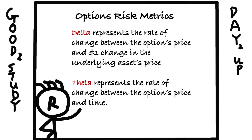Next we need to talk about the Greeks — finance people use Greek letters to represent different components of an option's price. Delta represents the rate of change between the option's price and every dollar change in the underlying asset price. For example, for a call option, if the delta is one, the option's price will go up by one dollar when the underlying asset's price goes up by one dollar. Theta represents the rate of change between the option's price and time — theta and option price have a negative correlation, meaning the contract is cheaper when it's closer to maturity, holding everything else constant.